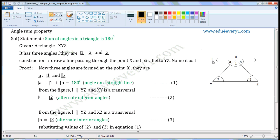Now, from the figure, L is parallel to YZ and XY is a transversal. So, Angle A will be equal to Angle 2. Alternate Interior Angles. When two lines are parallel and intersected by a transversal, then Alternate Interior Angles will be equal. So, Angle A is equal to Angle 2. Mark it as equation 2.